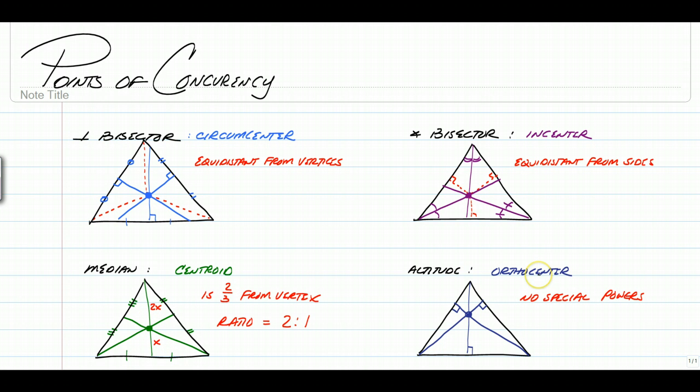Finally, the altitude. The altitude has a point known as the orthocenter, and it doesn't really have many special powers, but that's the point that is created when you intersect all three altitudes.